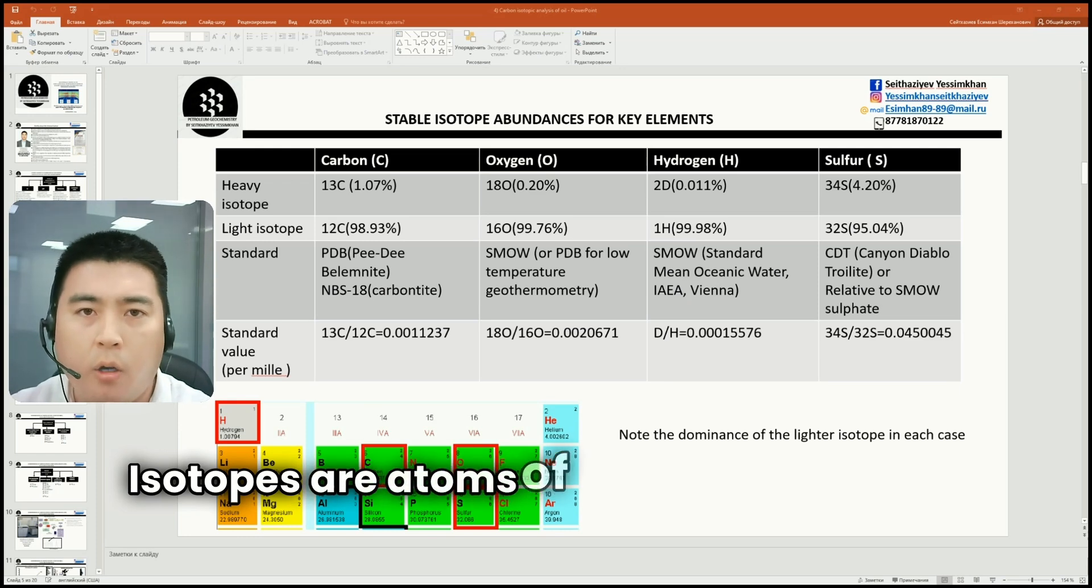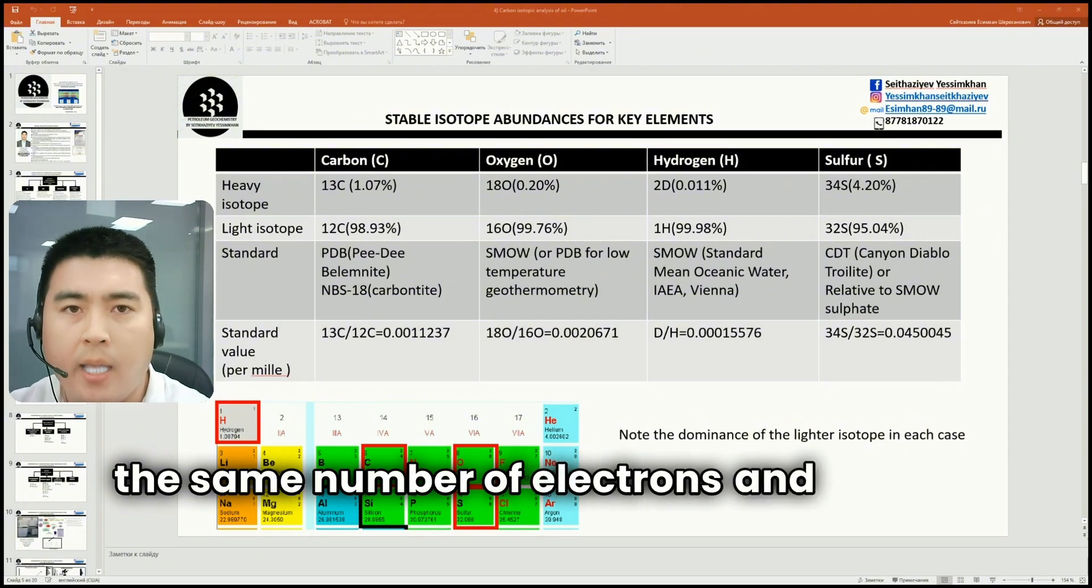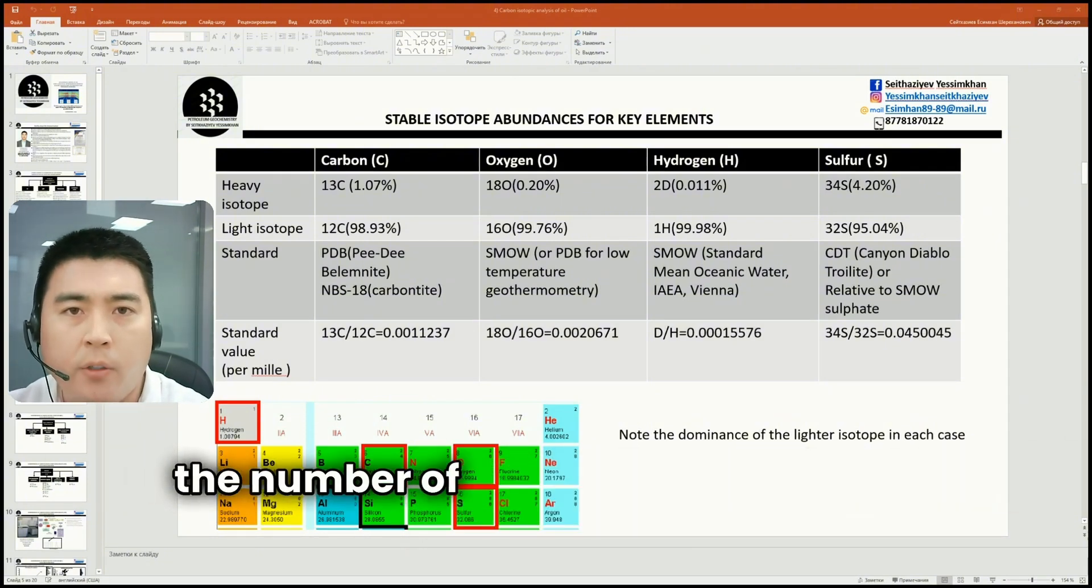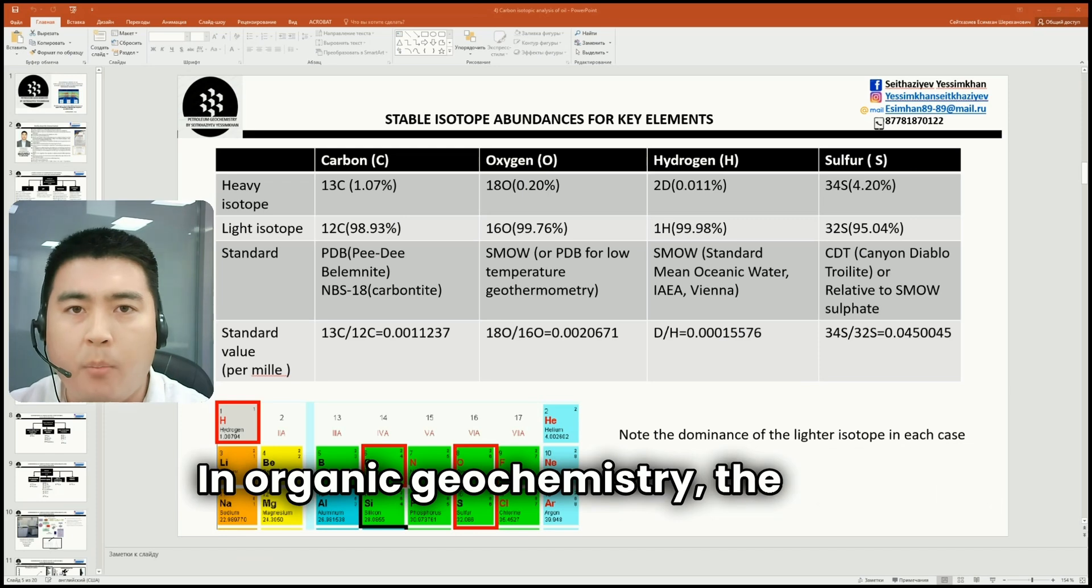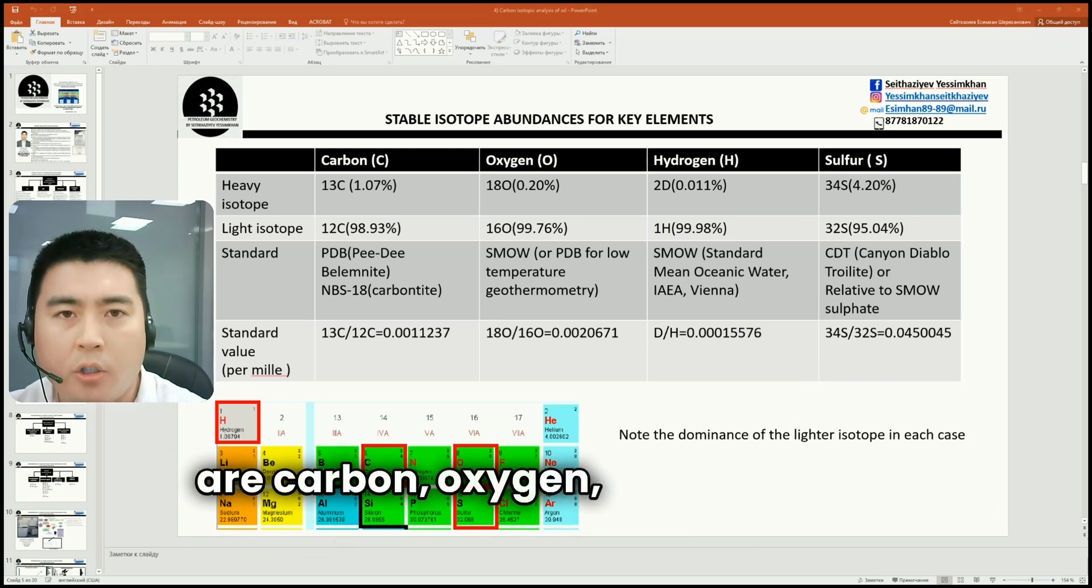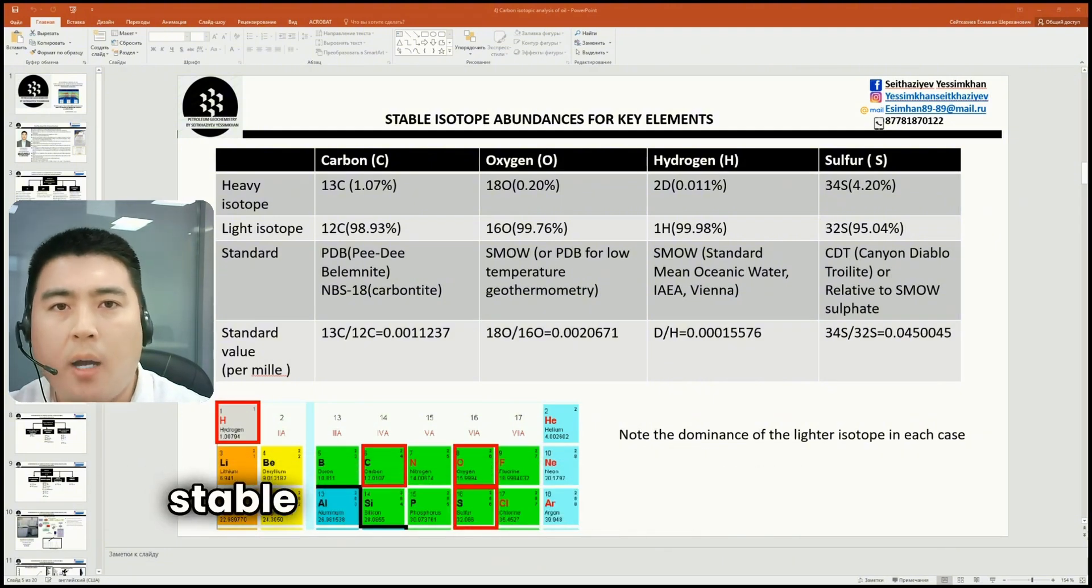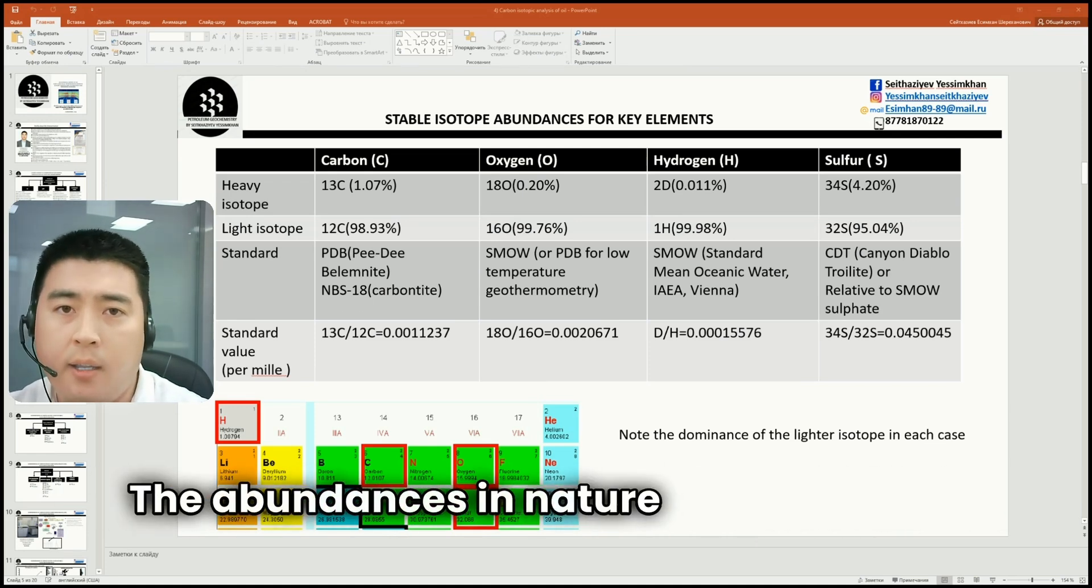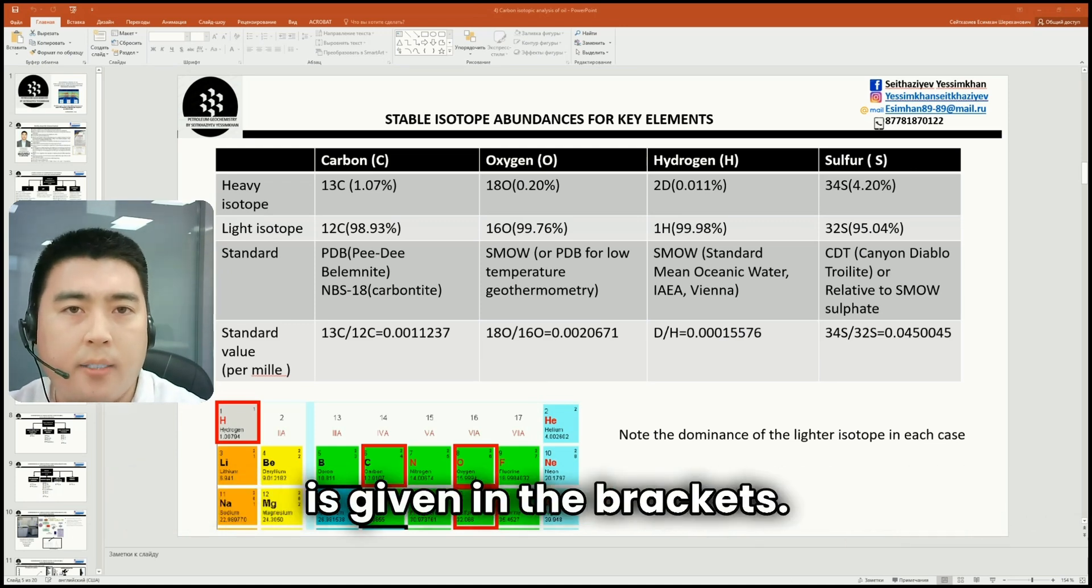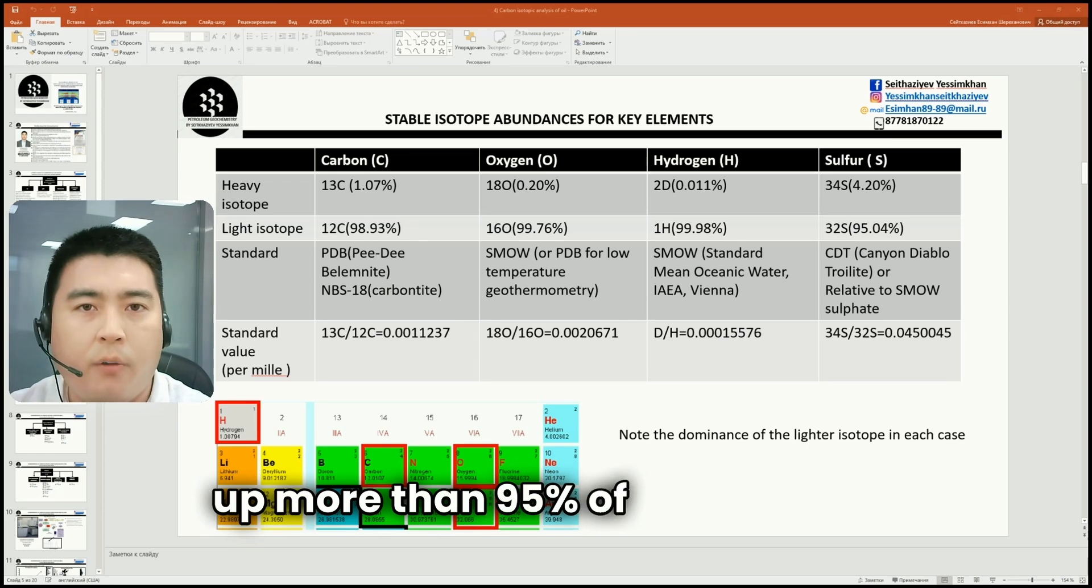Isotopes are atoms of the same elements that have the same number of electrons and protons but different numbers of neutrons, giving them different atomic masses. In organic geochemistry, the most important isotopes are carbon, oxygen, hydrogen, and sulfur. As can be seen in the table, stable isotopes can be heavy or light. Their abundances in nature as percentages are given in the brackets. It is clear that light isotopes make up more than 95 percent of all isotopes.